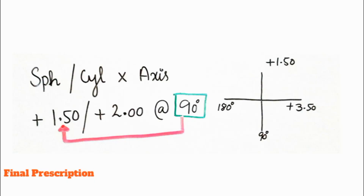The prescription format is: sphere / cylinder × axis. The sphere was plus 1.50 and the cylinder was plus 2.0. For the axis — this is very important — the axis used with the cylindrical power should be the axis of the sphere you have chosen. Since the sphere was plus 1.50 and its meridian is 90 degrees, the axis for this cylinder is 90 degrees. The cylinder's power meridian is at 180, but the axis meridian is at 90.